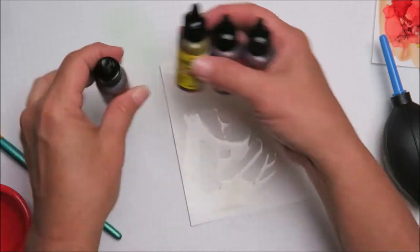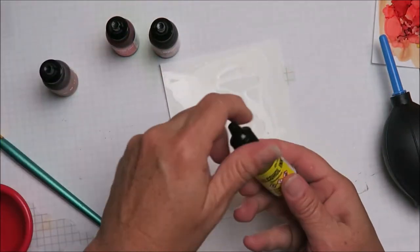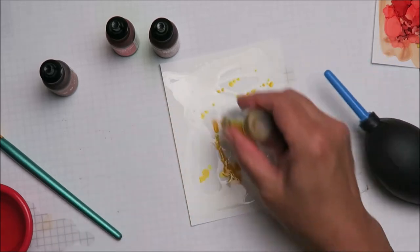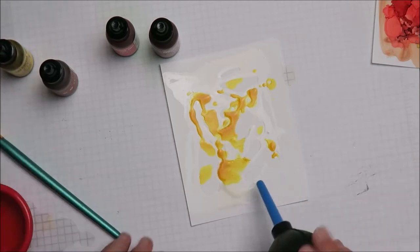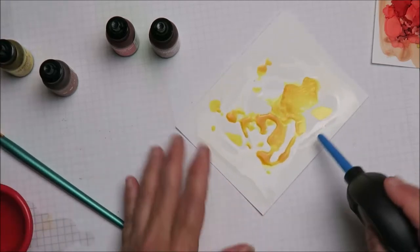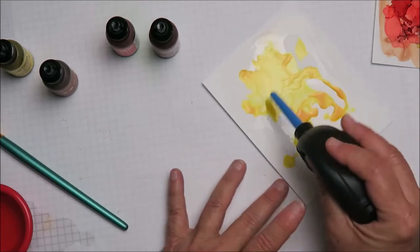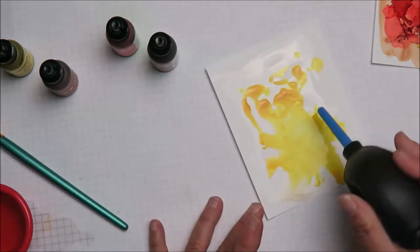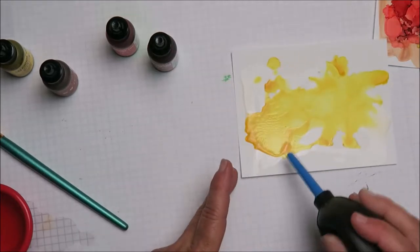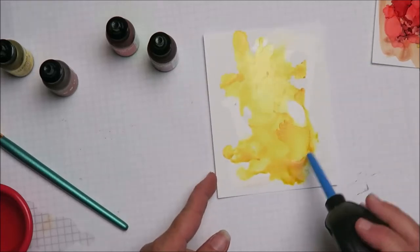I'm gonna start with the yellow one, the dandelion, and I just squirt all over. You're building layers, so you want to move this one around. Maybe you want some parts darker than the other, so you leave that pool there, but I just squirt away.